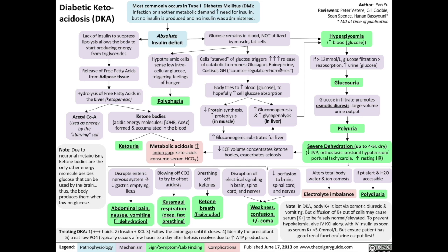These catabolic hormones include glucagon, epinephrine, cortisol, and growth hormone — collectively known as the counter-regulatory hormones. The result is that the body tries to increase blood glucose concentration to hopefully increase cell glucose absorption. This involves reduced protein synthesis and increased proteolysis in muscle to produce more substrates for gluconeogenesis in the liver. In the liver, there is increased gluconeogenesis — production of more glucose molecules — and increased glycogenolysis, the breakdown of glycogen, to produce more glucose. This paradoxically worsens the hyperglycemic state.